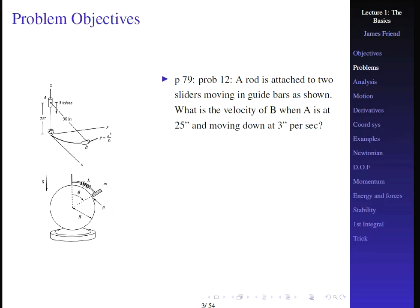The first problem for today's lecture is given on page 79 as problem 12. If we have a rod attached to two sliders moving along the guide bars, what is the velocity of B when A is at 25 inches and moving down at 3 inches per second? If you have a bar or link between the two items, you should be able to determine how one is moving if you know how the other is moving — this is all about kinematics.